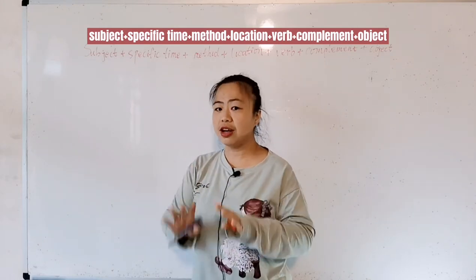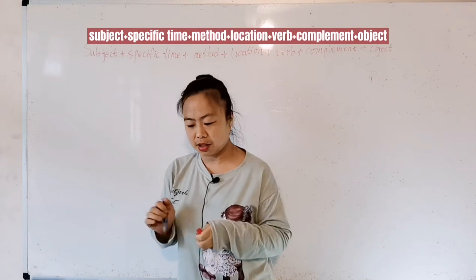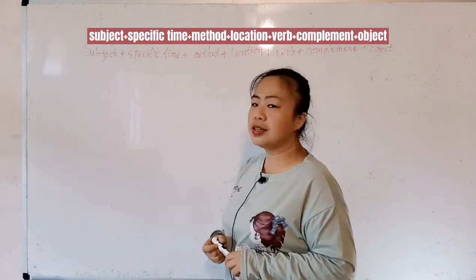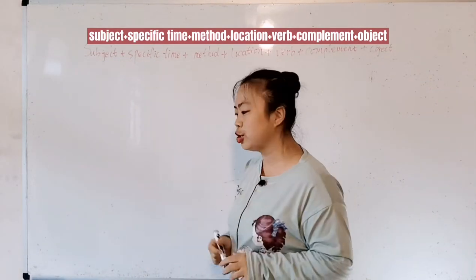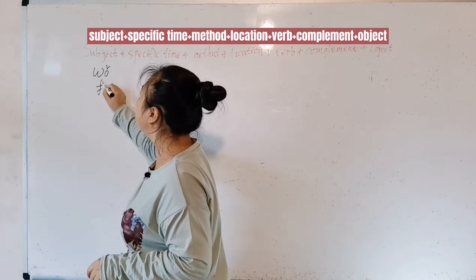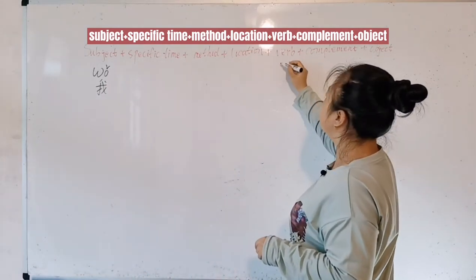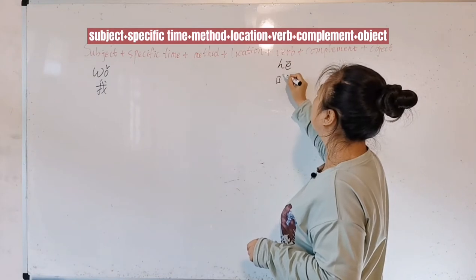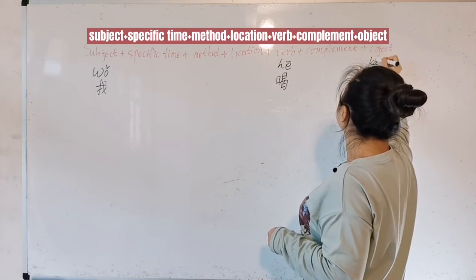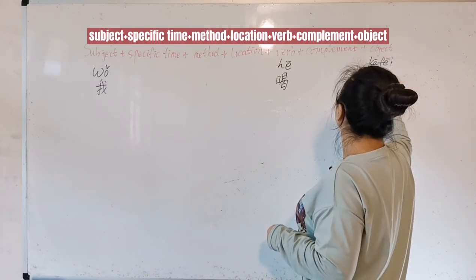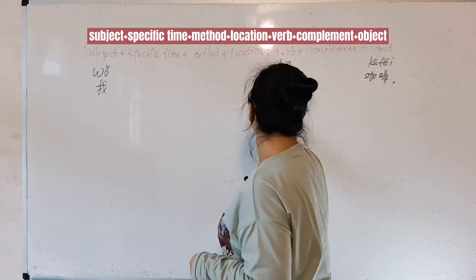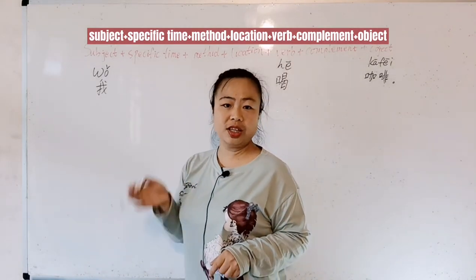So first we have to know it, then we spend a lot of time practicing it. Now let's see some sentences. The first one is: I drink coffee. How do you say 'I drink coffee' in Chinese? It's wǒ, which means 'I'. Drink is hē. Coffee is kāfēi. So wǒ hē kāfēi means 'I drink coffee'.